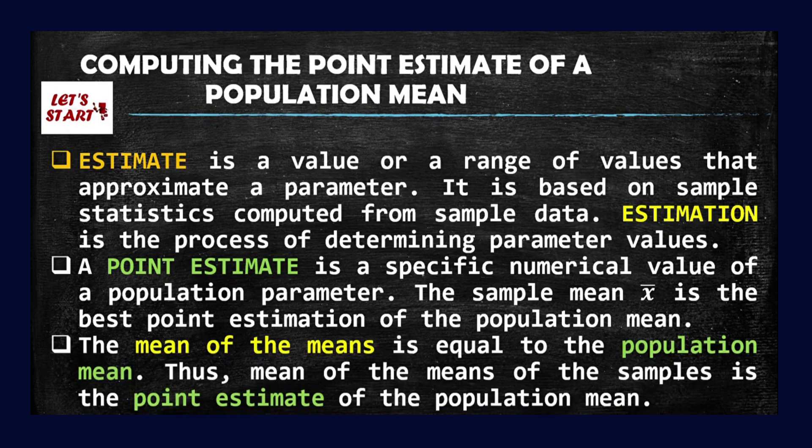What is point estimate? The sample mean is the best point estimation of the population mean. The mean of the means is equal to the population mean. When we get the mean of all our means from the entire population, we call that population mean. Now, the mean of the means of the samples is the point estimate of the population mean. So again, when we take all the means of our samples, we call that the point estimate of the population mean. So let's have an example for this one.